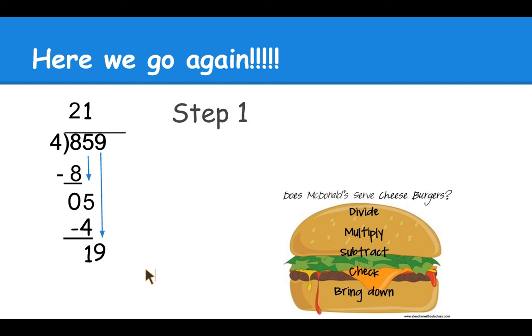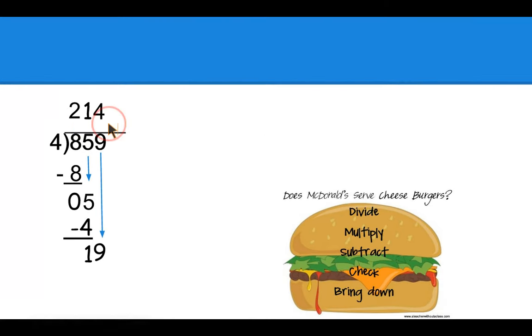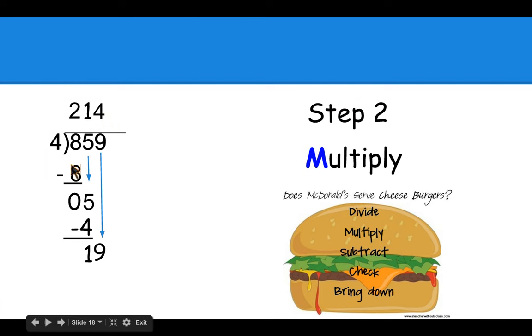Back to step one, divide four into 19. Goes four times. Step two, multiply four times four is 16.